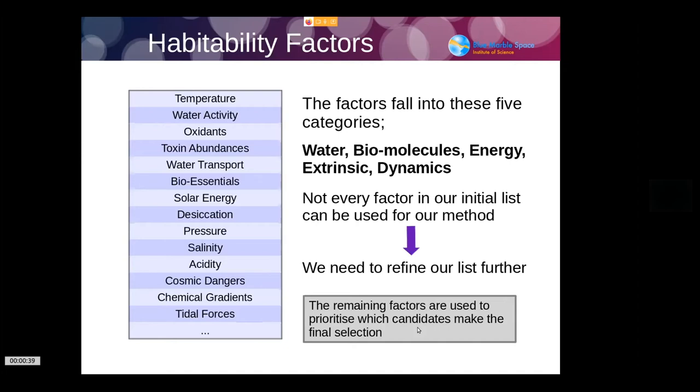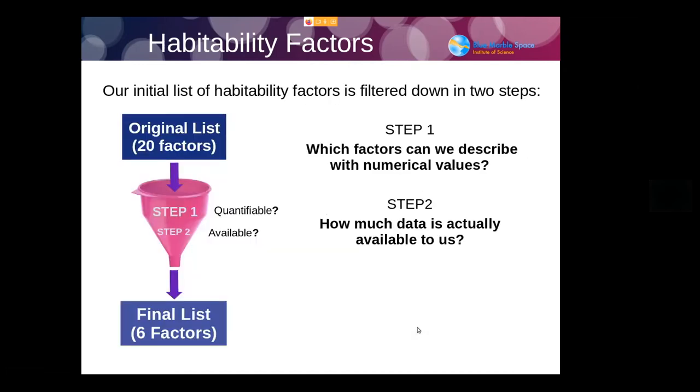The way we went about that is we took our original set of 20 factors and filtered them by two particular criteria. Which of these factors can we actually give a number to? The second part of that filter was: let's comb through all the data and find out how much of this data is actually available to us. By doing this process and going through these filtering steps, we arrived at a final list.